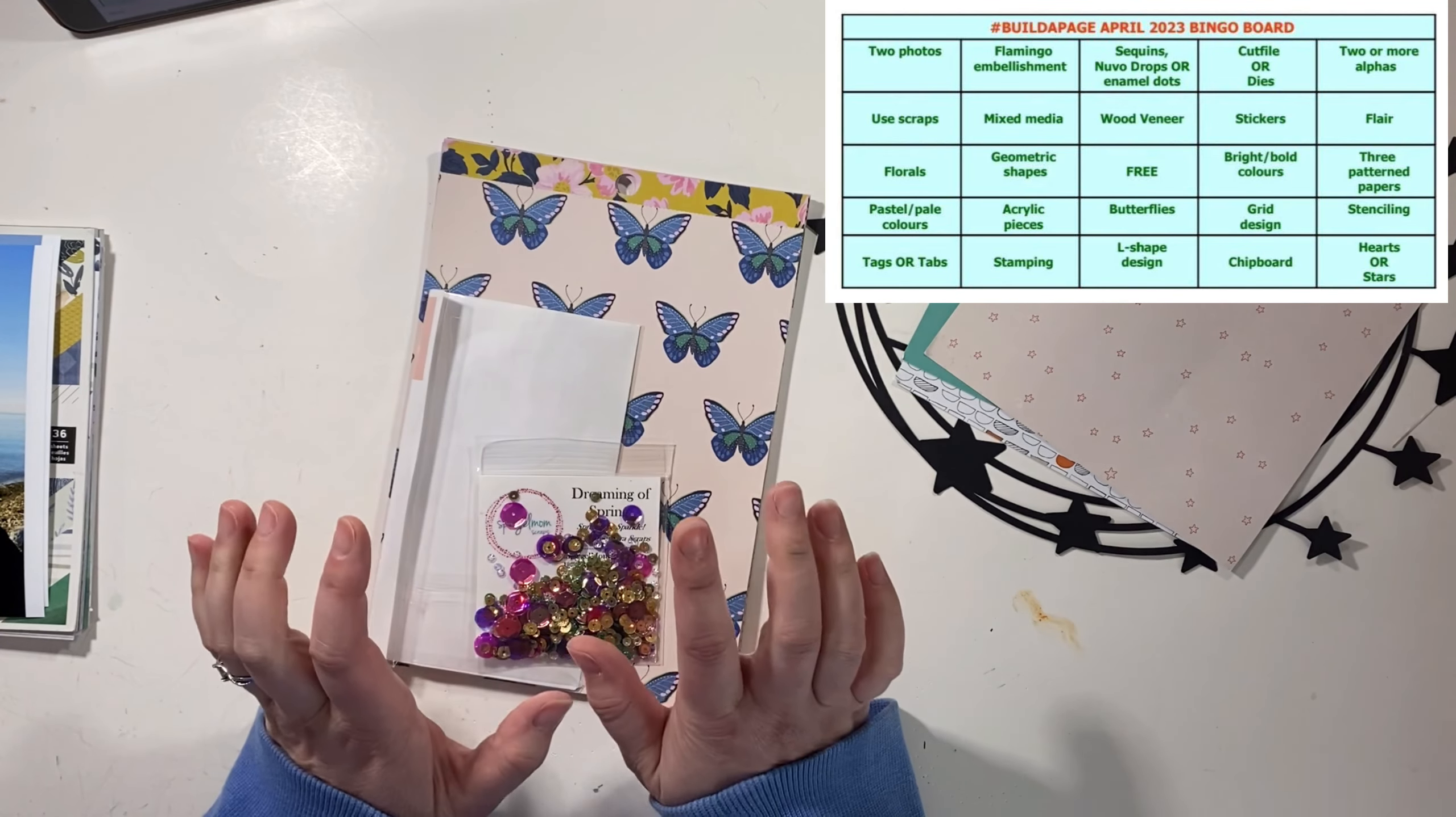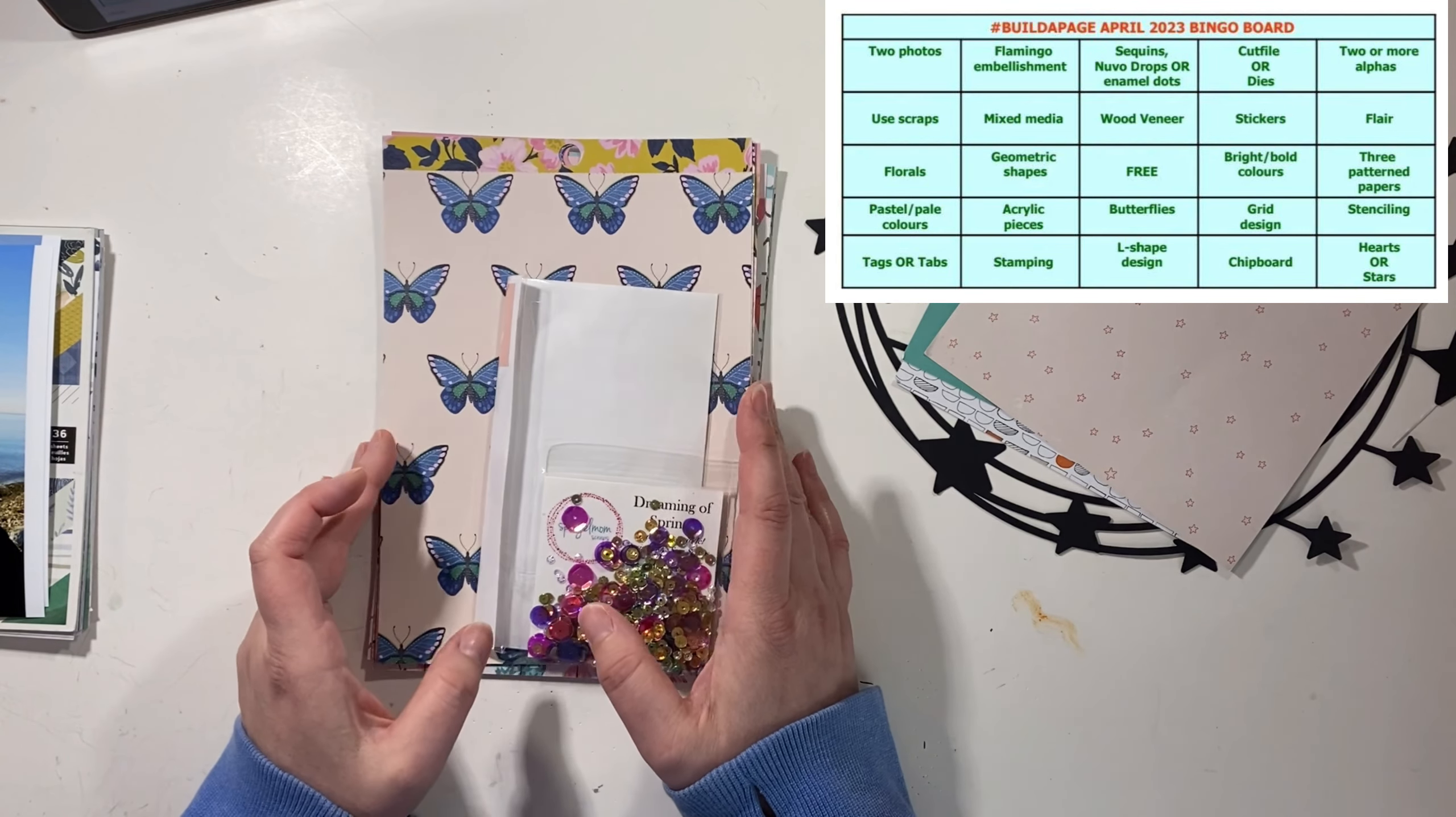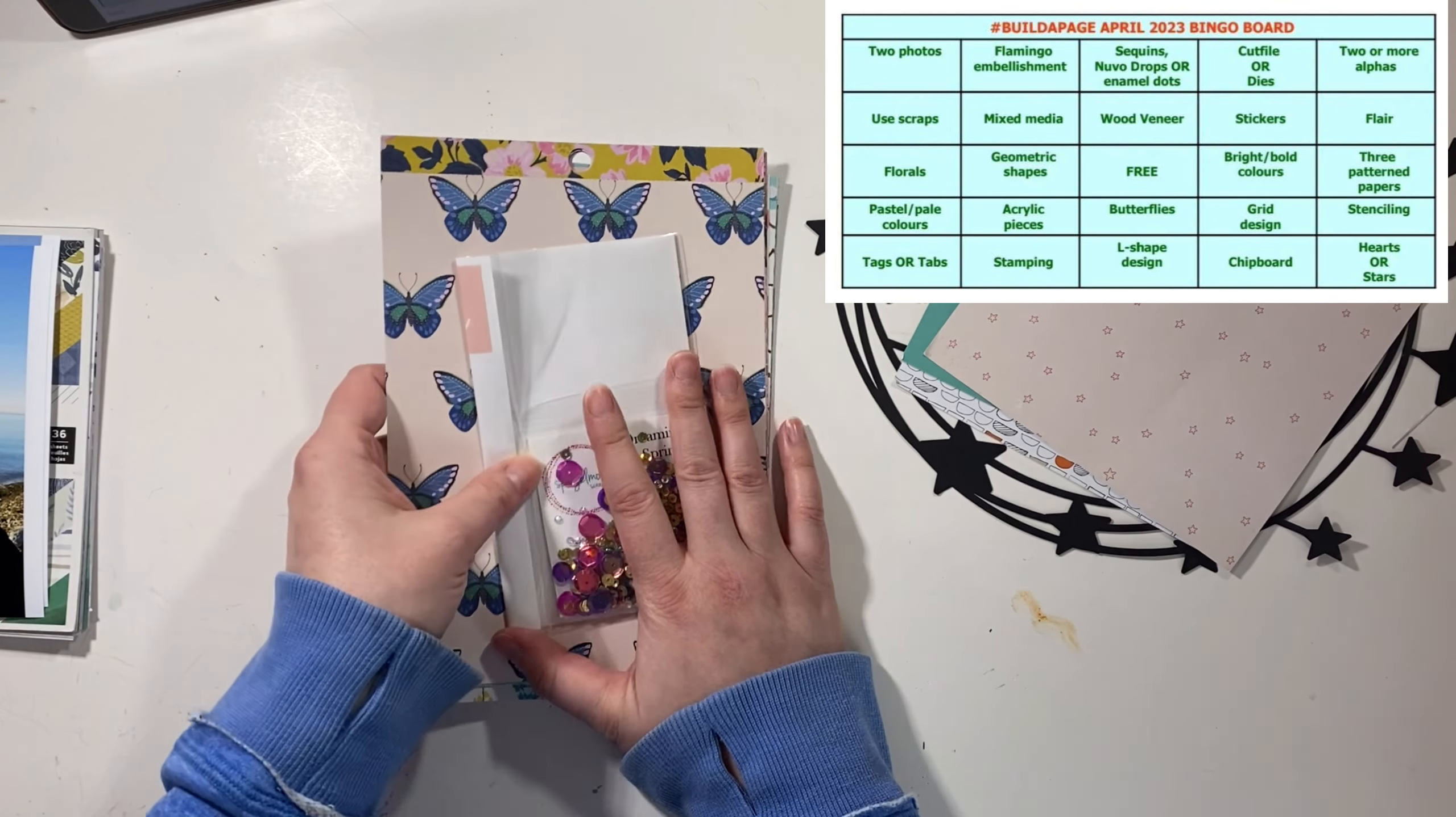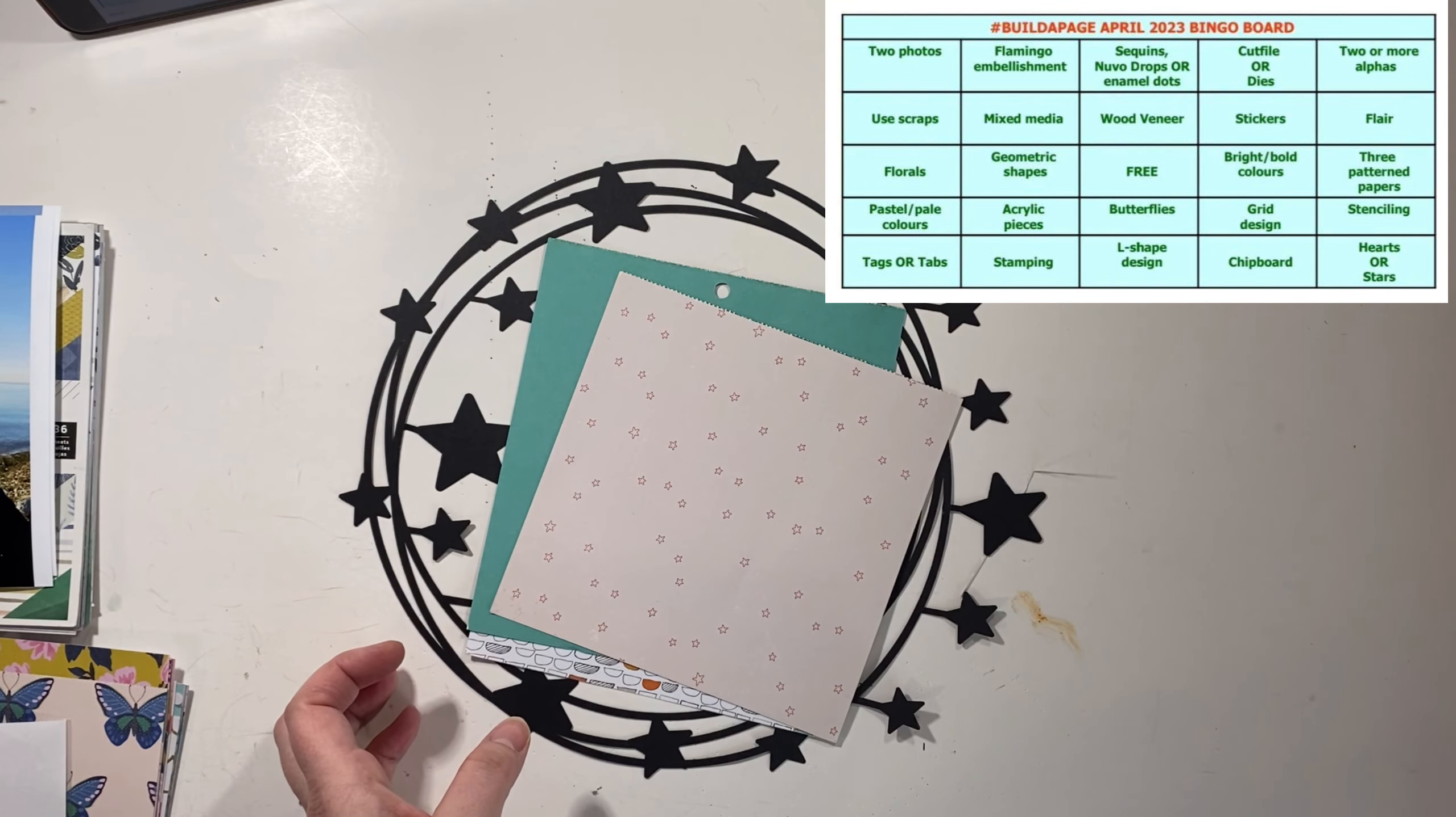So I don't have photos yet for this one. I haven't quite figured that out. I will grab that before I make the layout, but I have this part ready to go following the bingo board. This bingo board has given me a bit of trouble. Like, I don't know how to do this.